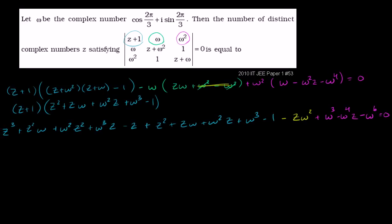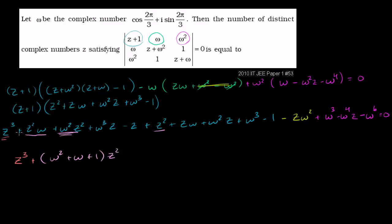Let's group by powers of z. We have one z cubed term. For z squared terms, we collect the coefficients: omega squared plus omega plus 1, times z squared. So those z squared terms are taken care of.